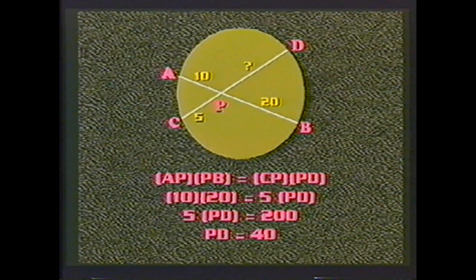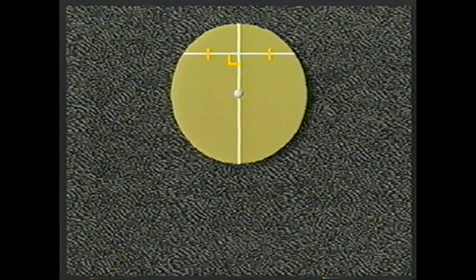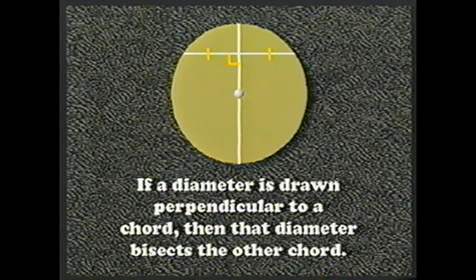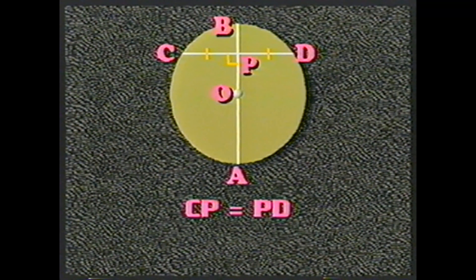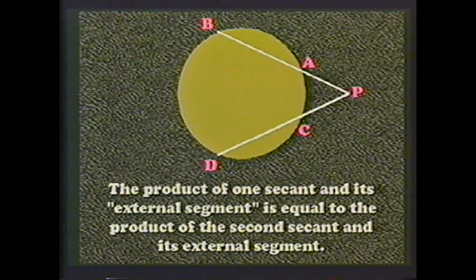Now a couple of facts about chords. In this figure, chords AB and CD intersect inside the circle at point P. A theorem states that the product of the lengths of the segments on one chord equals the product on the second chord: AP × PB = CP × PD. As an example, given AP = 10, PB = 20, and CP = 5, we have 10 × 20 = 5 × PD, so 200 = 5 × PD, giving PD = 40.